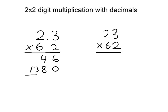For our final step, we just have to add it. So 6 plus 0 is 6, 4 plus 8 is 12, then 1 plus 3 is 4, and 1 plus nothing is 1. So we have our final answer of 1,426.